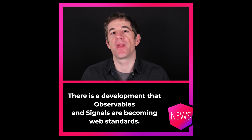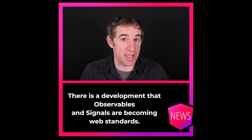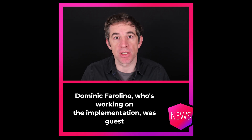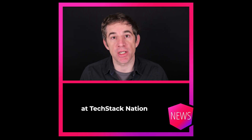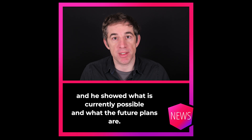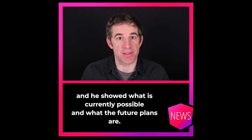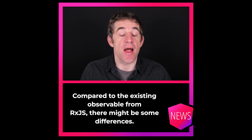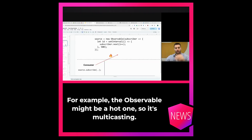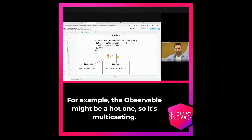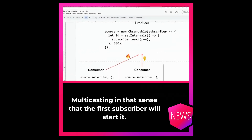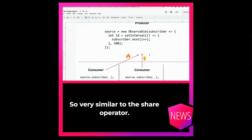There is a development that observables and signals are becoming web standards. Dominic Farrellino, who is working on the implementation, was a guest at TechStackNation and showed what is currently possible and what the future plans are. Compared to the existing observable from RxJS there might be some differences. For example, the observable might be a hot one, so it's multicasting — in the sense that the first subscriber will start it, very similar to the share operator.